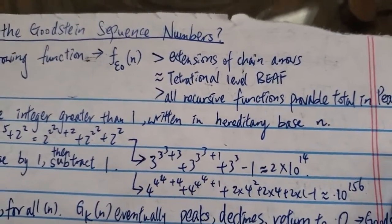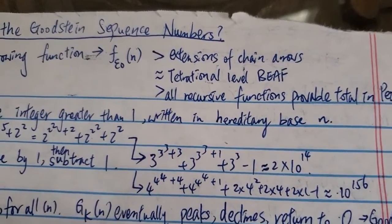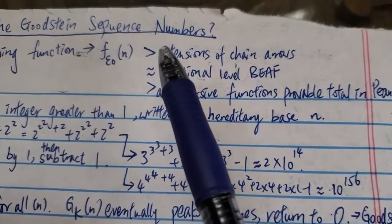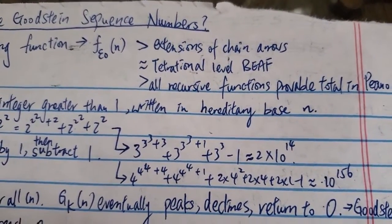It's pretty fast-growing, which grows way faster than even any extensions of the chain arrow notation.